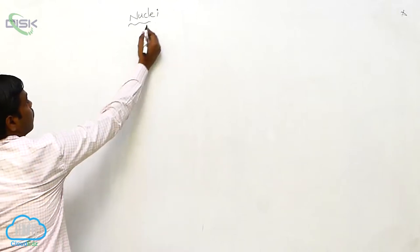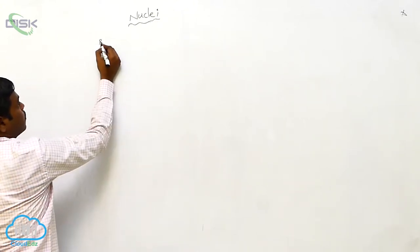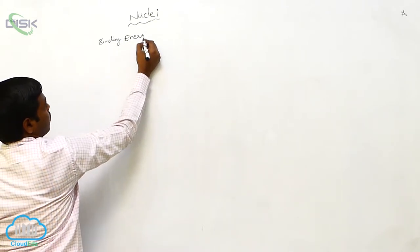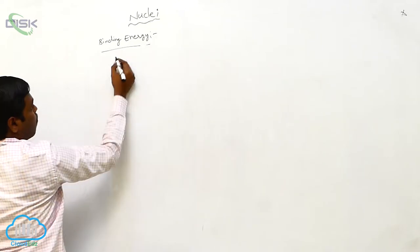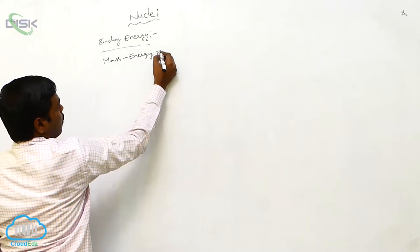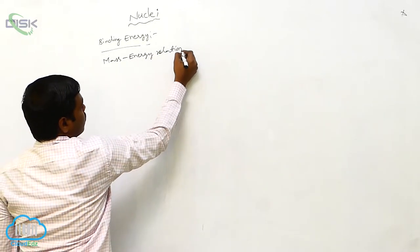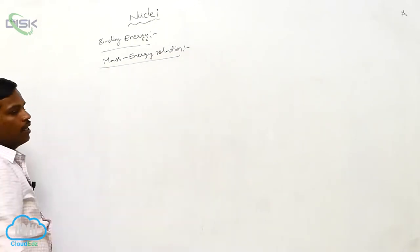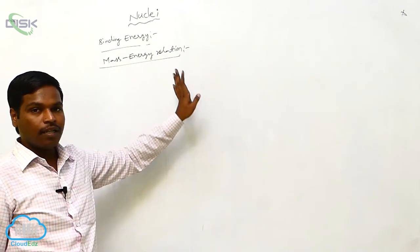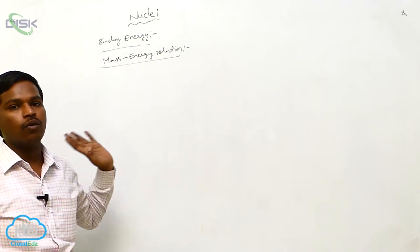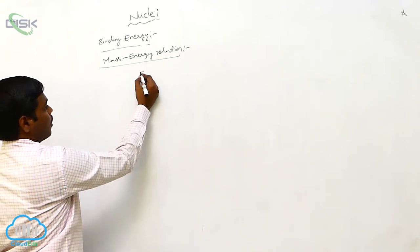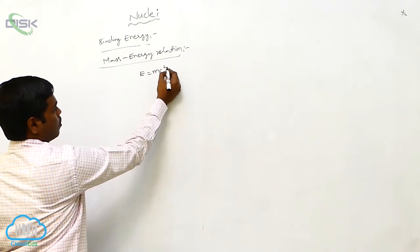Binding energy and mass energy relation. This mass energy relation is given by Einstein. According to Einstein, mass is converted into energy. The mass energy equivalent relation is E equals mc squared.